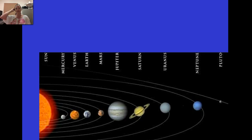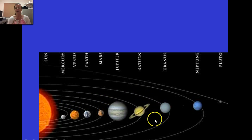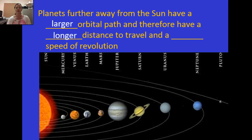Looking at the orbits of the planets, the ones closer to the sun have a shorter orbital path and therefore move faster around the sun. The outer planets — the Jovian planets — have a longer path and therefore take a longer time to revolve around the sun. The further away from the sun, the larger the orbital path and the slower the speed of revolution.